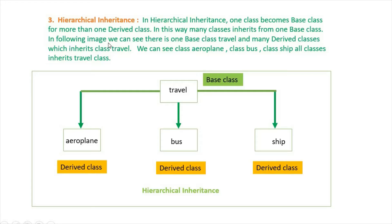In the following image, we can see there is one base class Travel and many derived classes which inherit class Travel. We can see class Aeroplane, class Bus, and class Ship — all classes inherit the Travel class.